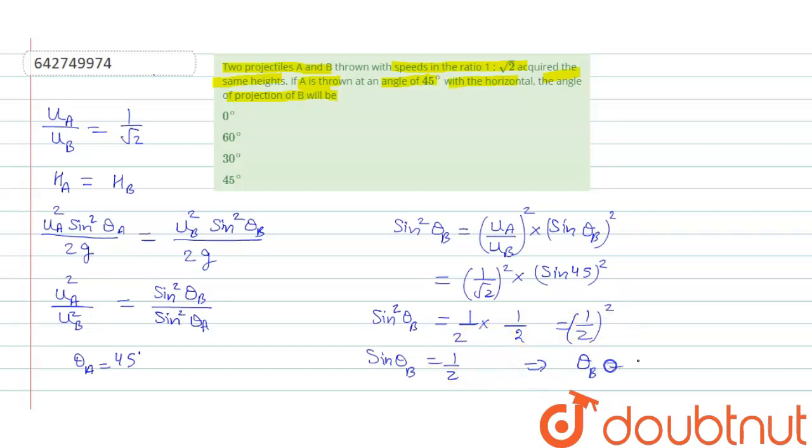So, theta B becomes 30 degree. We can say that option 3 is correct.